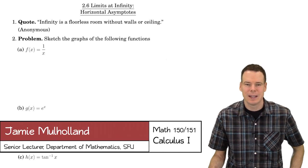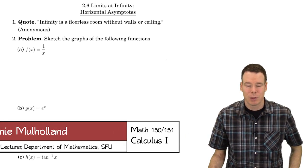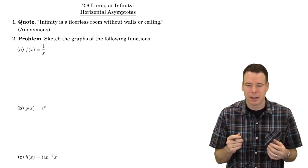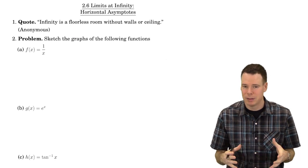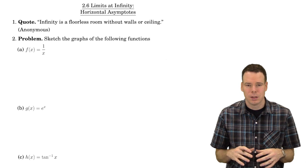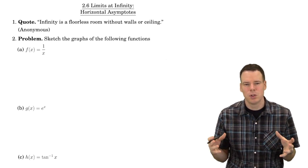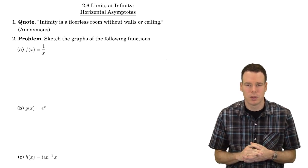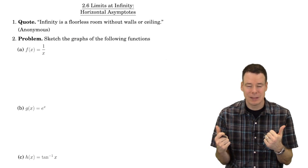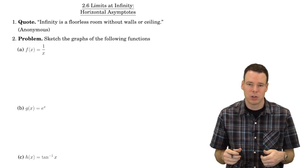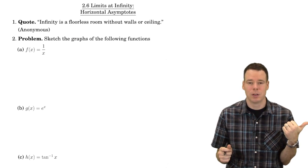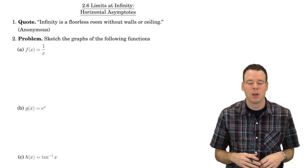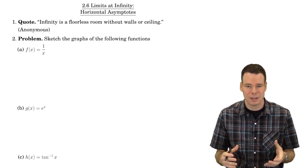Hi everyone, welcome back. In this lecture we're going to look at limits at infinity. Up till now our focus on limits has always been what is the limiting value of a function as x goes to a particular number — the limit as x goes to a of f. Now we're going to be focused on the question: what is the function doing at its ends? What's the end behavior? What is our function doing as x values go off to positive or negative infinity? These are known as the limits at infinity.